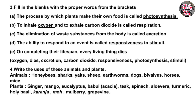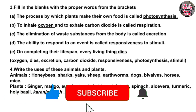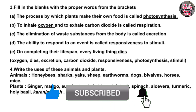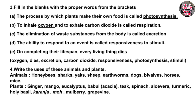We completed question two. Now question three: Fill in the blanks with the proper words. A. The process by which plants make their own food is called — photosynthesis. B. To inhale oxygen and to exhale carbon dioxide is called respiration. C. The elimination of waste substances from the body is called excretion. D. The ability to respond to an event is called responsiveness to stimuli. E. On completing their lifespan, every living thing dies.